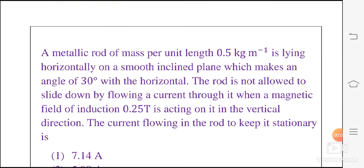A metallic rod of mass per unit length 0.5 kg per meter is lying horizontally on a smooth inclined plane which makes an angle of 30 degree with the horizontal. The rod is not allowed to slide down by flowing a current through it when a magnetic field of induction 0.25 tesla is acting on it in the vertical direction. The current flowing in the rod to keep it stationary is.